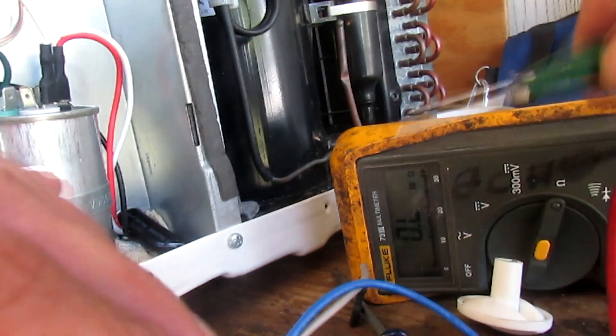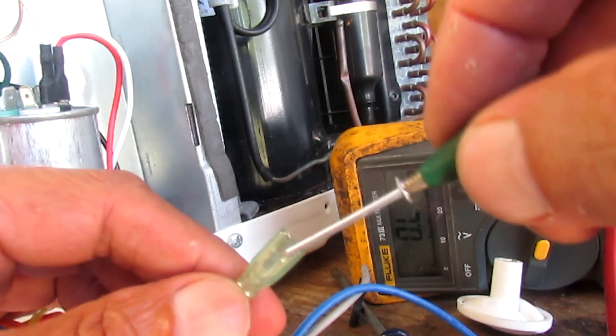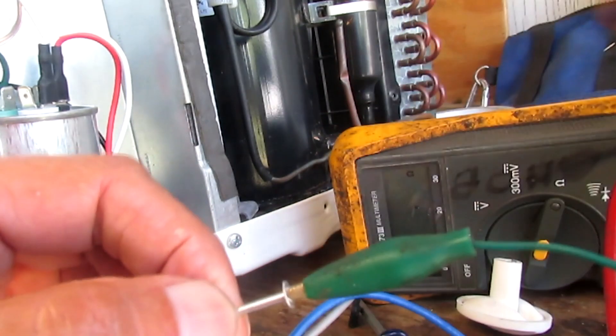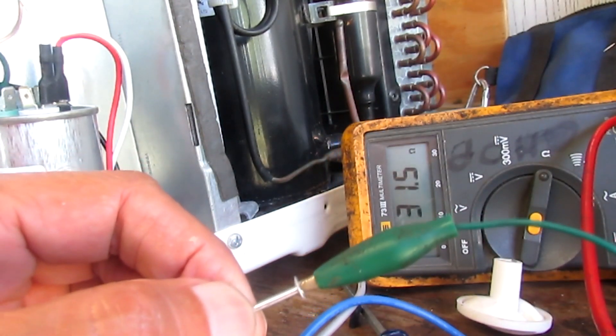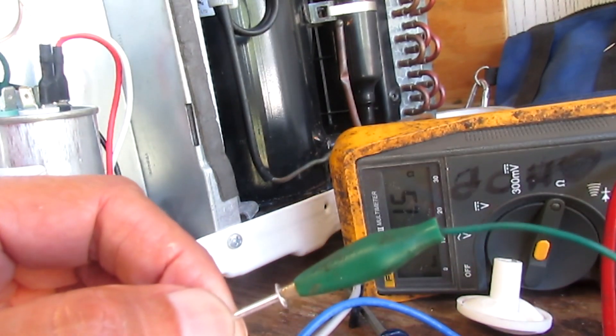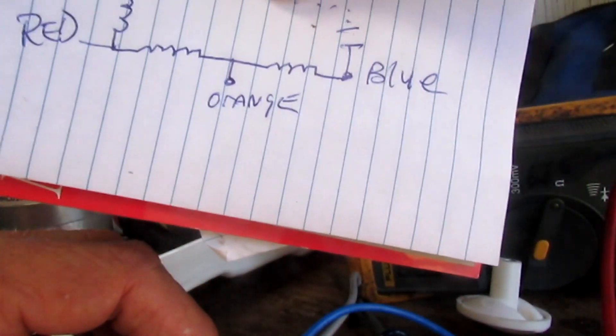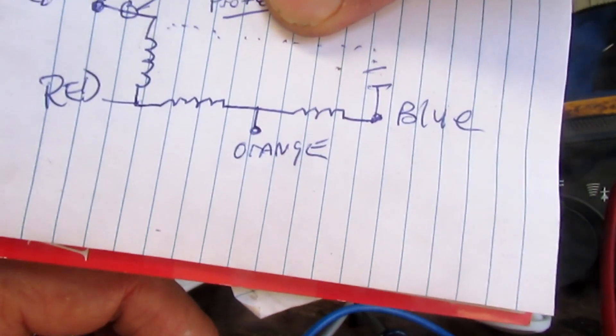So now I'll hook my meter to the blue lead. Now let me check out the orange lead, and there we go. We got 31.5 ohms. So I don't have the specs for this motor, but I'm going to guess that isn't a dead short and it isn't an open. That's the blue to the orange.